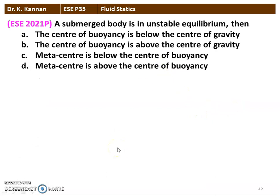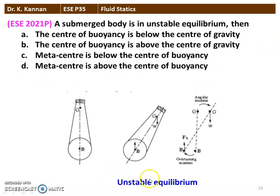The next question from the 2021 question paper. A submerged body is in unstable equilibrium. The options are: center of buoyancy is below the center of gravity; center of buoyancy is above the center of gravity; metacenter is below the center of buoyancy; metacenter is above the center of buoyancy. For unstable equilibrium, the center of gravity is above the center of buoyancy, so the correct option is: center of buoyancy is below the center of gravity.